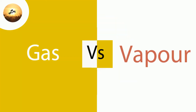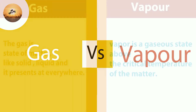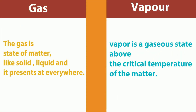Hi guys, welcome to Learn Mechanical. Today, gas vs vapor is our topic. This question arises because gas and vapor look similar. Gas is a state of matter, like solid and liquid, and it is present everywhere. But vapor is a gaseous state above the critical temperature of a substance.